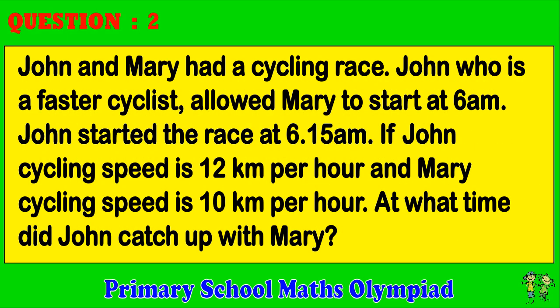Question 2. John and Mary had a cycling race. John, who is a faster cyclist, allowed Mary to start at 6 a.m. John started the race at 6:15 a.m. If John's cycling speed is 12 km per hour and Mary's cycling speed is 10 km per hour, at what time did John catch up with Mary?